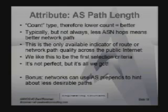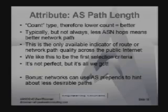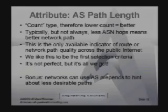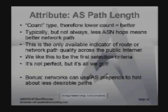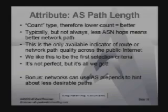For AS path length, this is a count type — the lower count, the better. The fewer networks you have to traverse, the better. Less ASN hops logically means better performance — less points of contention, less points of failure, less possibility for a congested peering point or some kooky route policy. This is really the only universal indicator of anything near path quality that we have on the Internet. It's not perfect, but generally you can say 7 to 9 times out of 10, less AS hops is a better path. I like it as the first selection criteria: choose the shortest path, start that way, and then use metrics to do some tweaks.